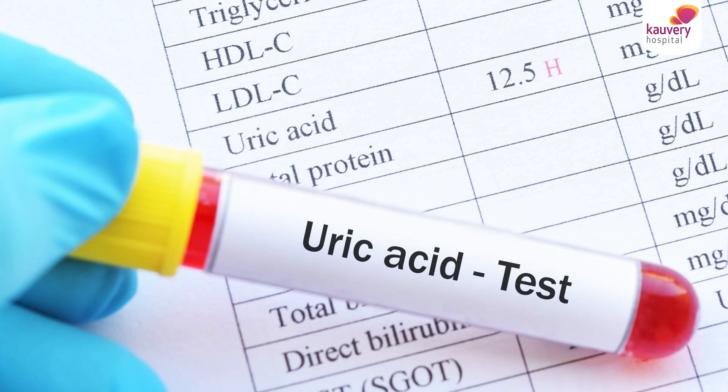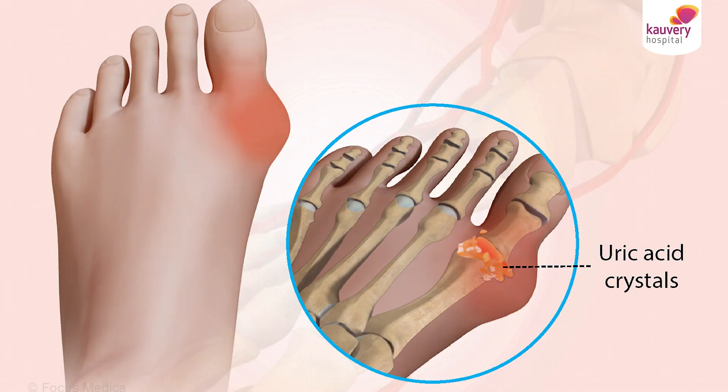We have to do a routine checkup blood test. That's why we have to do some dietary restrictions and follow some do's and don'ts. We should avoid drinking a lot of soft drinks and too much alcohol. All this will precipitate uric acid in the kidney and in the joints.